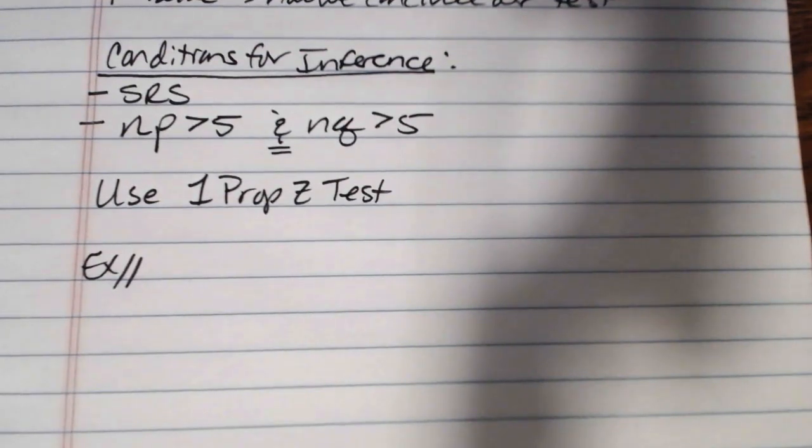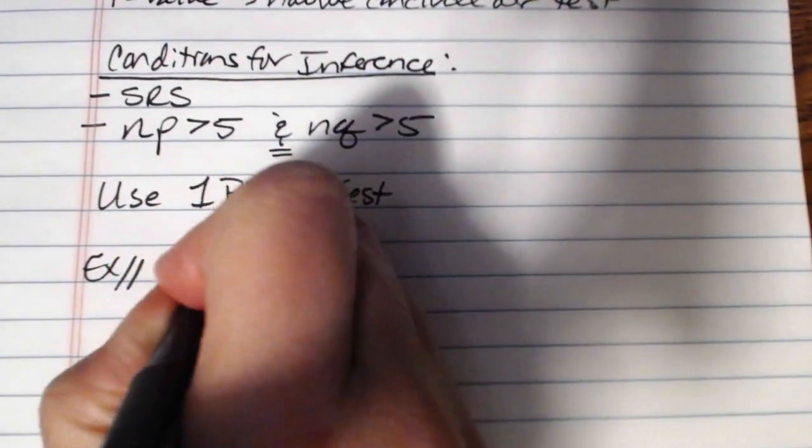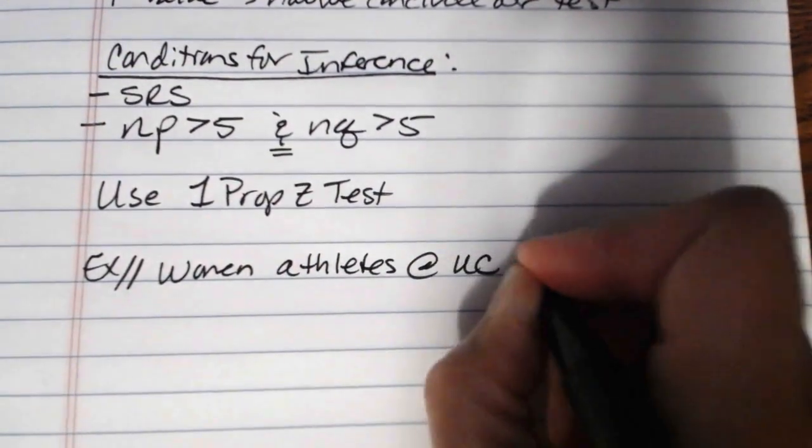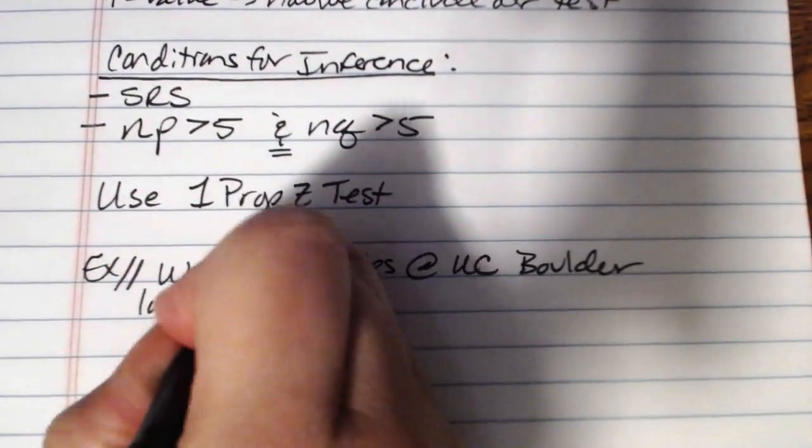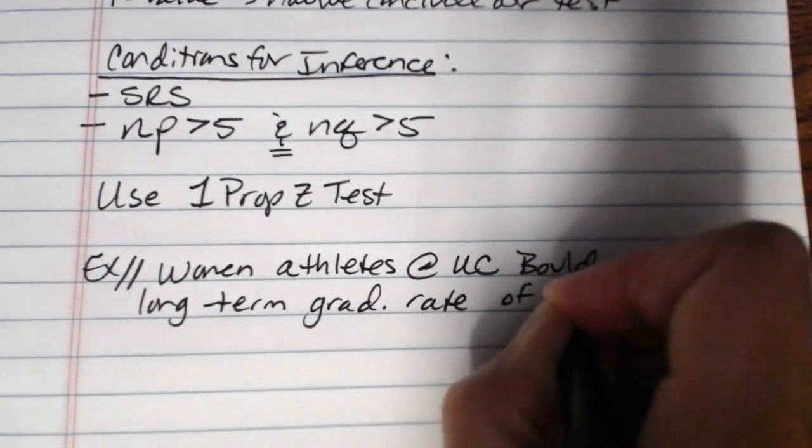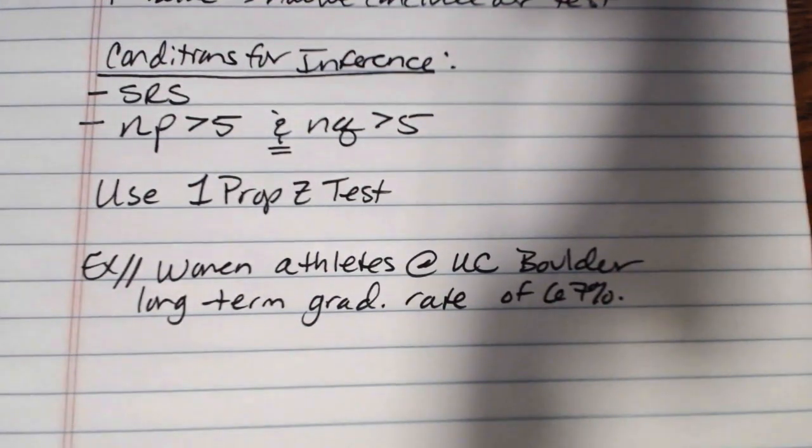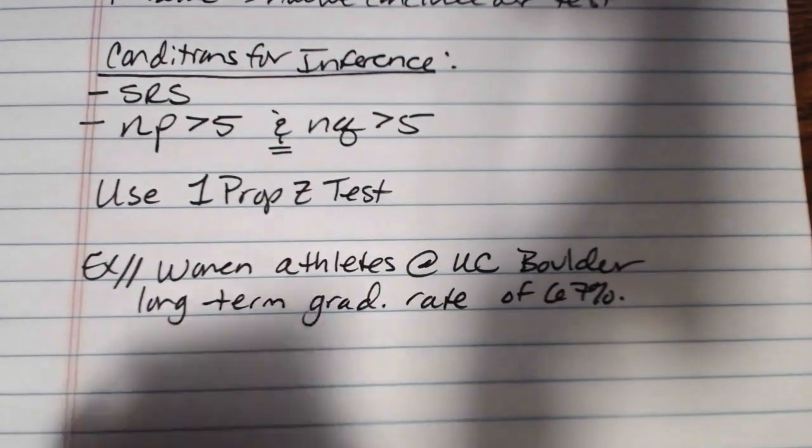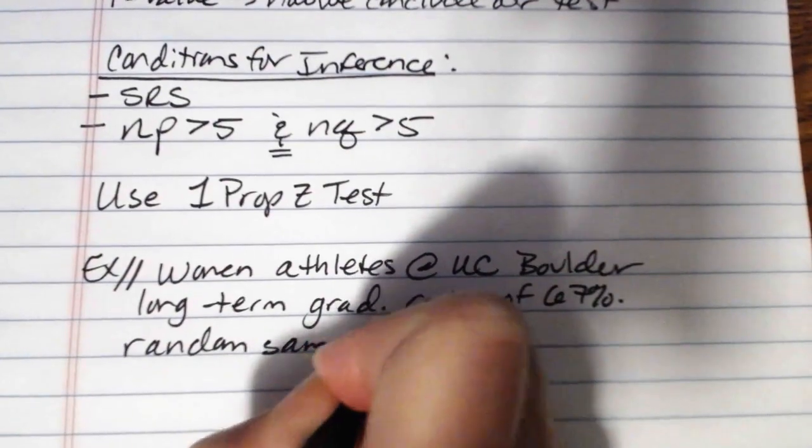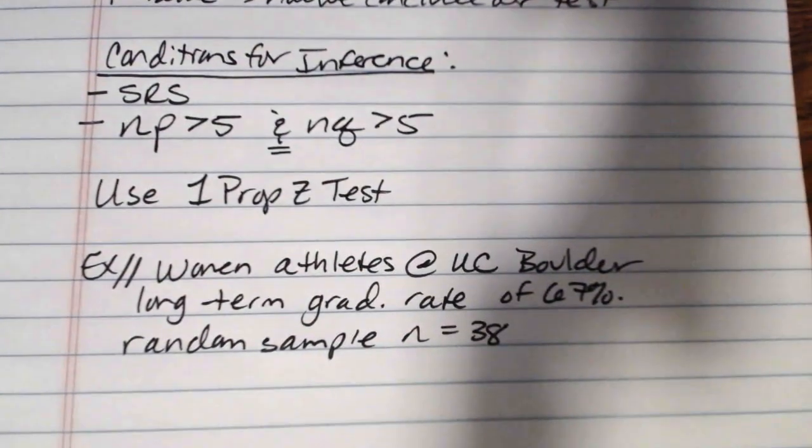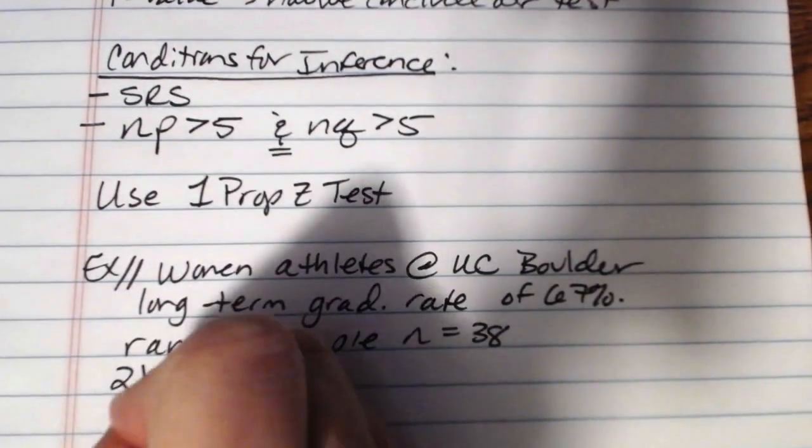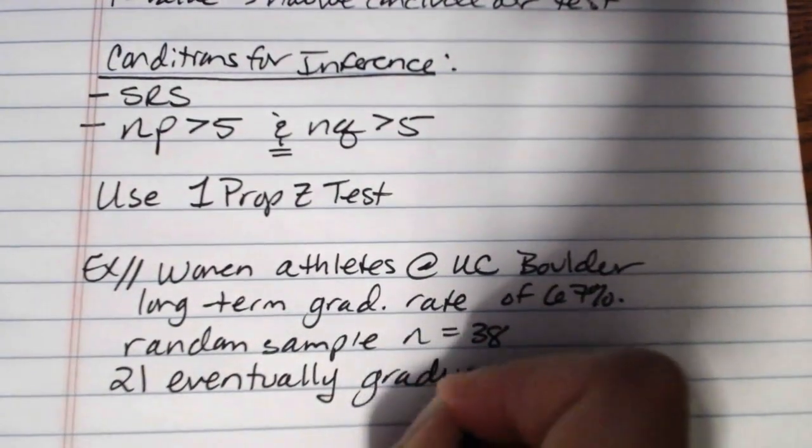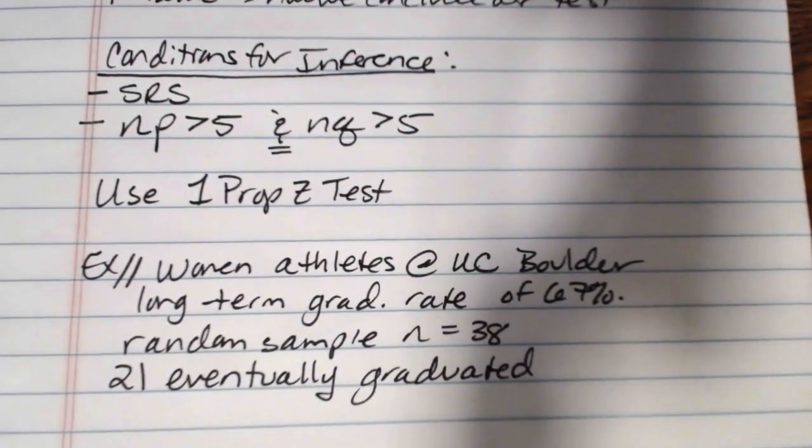Let's take a look at an example. In this example, we have women athletes at the University of Colorado Boulder have a long-term graduation rate of 67 percent. Over the past several years, a random sample of 38 women athletes at the school showed that 21 of those 38 eventually graduated.